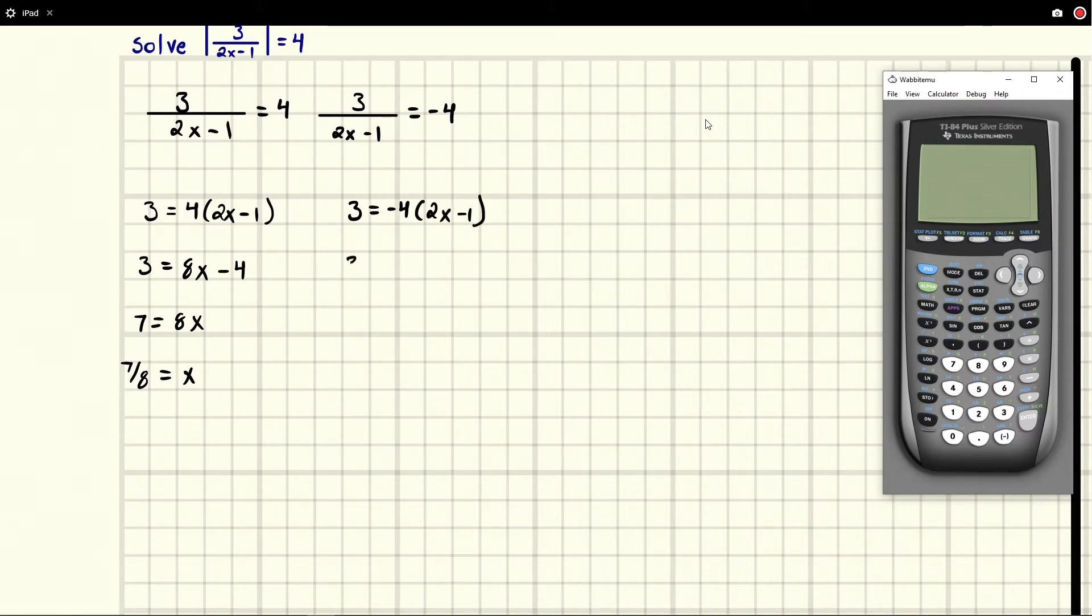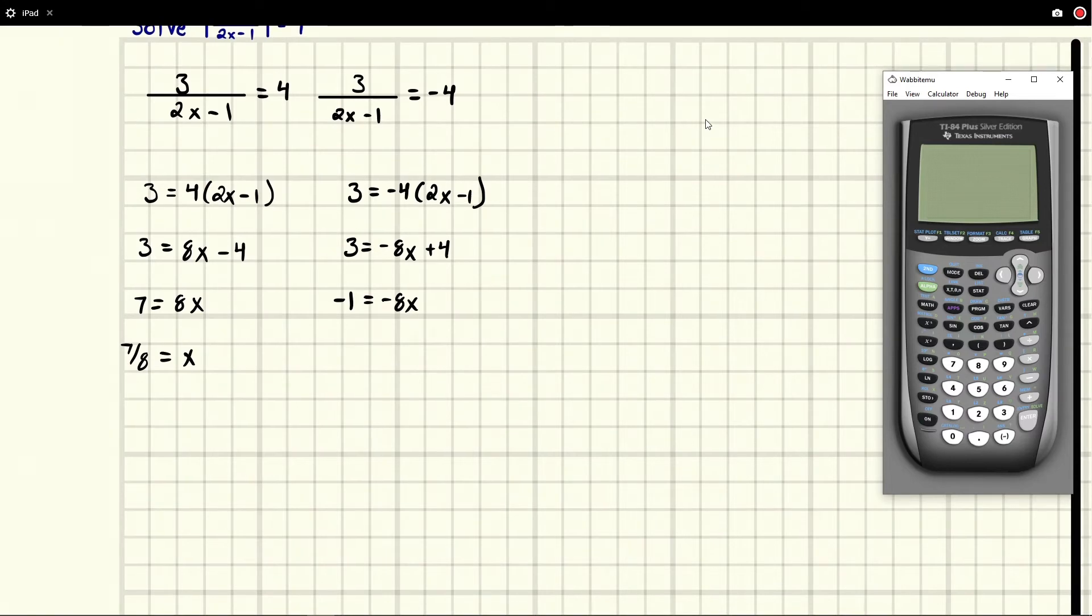We're going to distribute. We're going to get negative 8x plus 4. Then we're going to subtract 4 from both sides. In this case we're going to get negative 1 is equal to negative 8x, and then we're going to divide by negative 8 and we're going to get x is equal to positive 1 eighth.